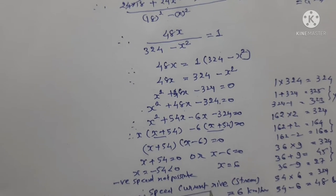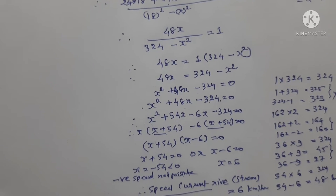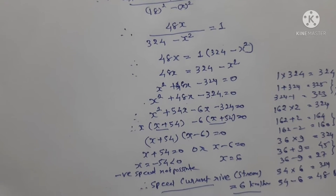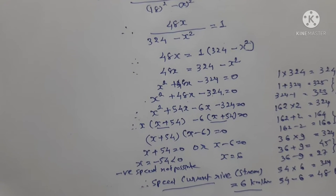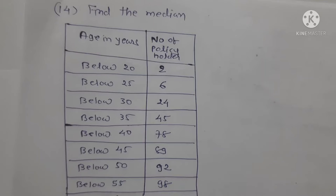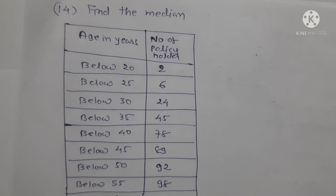Therefore the speed of the current river stream equals 6 km per hour. This is the answer: 6 km per hour.